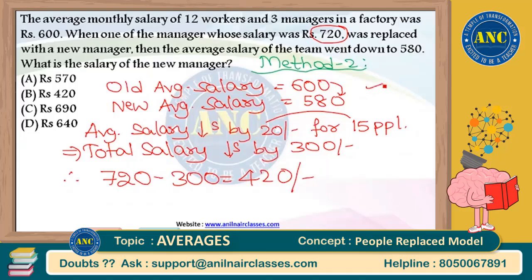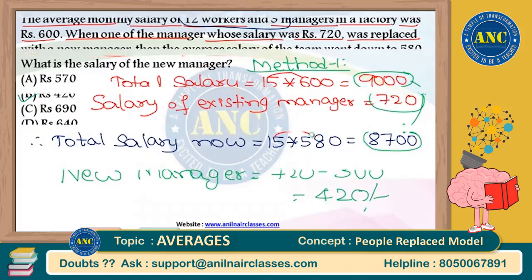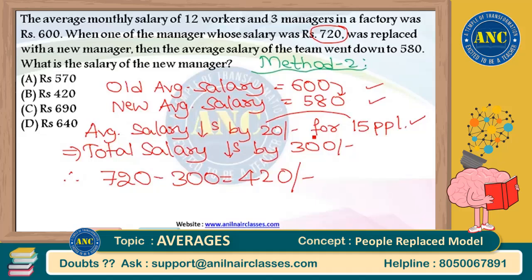Method 2 does not involve too many bigger calculations. Method 1 involves 15 × 600 and 15 × 580, which require more calculation. Method 2 involves lesser and easier calculations, so please switch to Method 2 rather than Method 1. I believe that my idea of solving problems is very clear for my students.